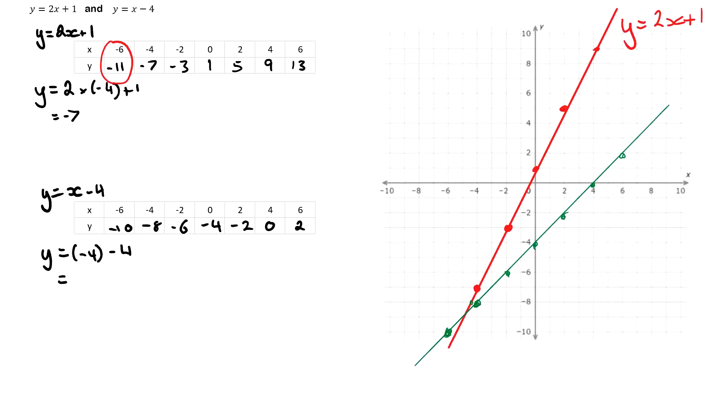Now the point of intersection is down here. You would say it's approximately negative 5 and then negative 9.